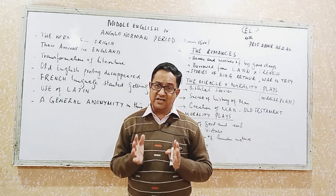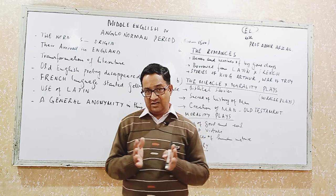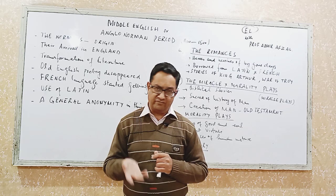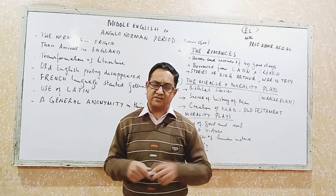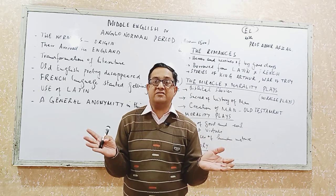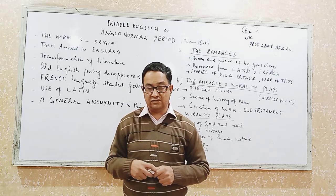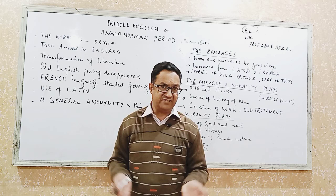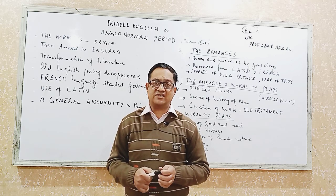That important genre was Allegory. Allegory is a piece of writing, especially poetry, in which we find more than one meaning — double layers of meaning, and sometimes even triple layers of meaning. Allegory stories apparently told a story of worldly objects, but actually they were based on lessons of morality.